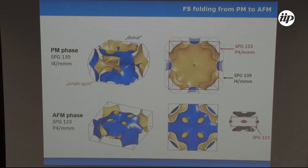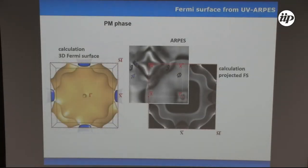For example, the jungle-gym Fermi surface sheet will fold onto itself and hybridize with the donut — this would be the signature of strong reconstruction. What you would see is the appearance of banana-shaped features, one more gap position, and four oval features resulting from cutting the bottom of the donut. We then performed ARPES measurements in the paramagnetic phase at around 40 K, above the transition. Comparing the DFT results with what we see in ARPES, we could see the large Fermi surface — the donut remains open — and also signatures of the jungle-gym and the next Fermi surface sheet.